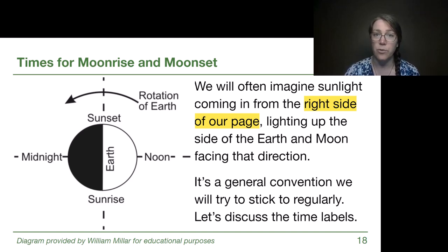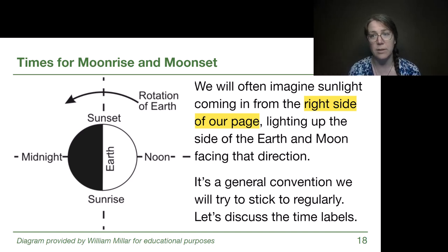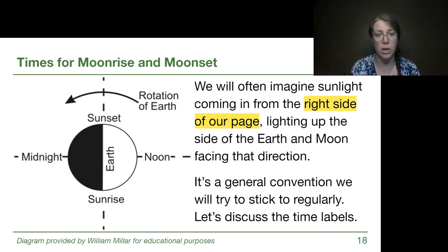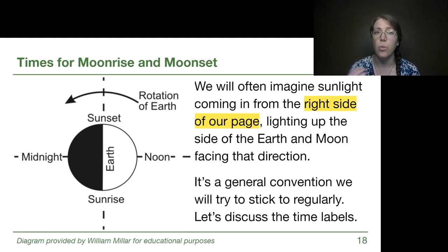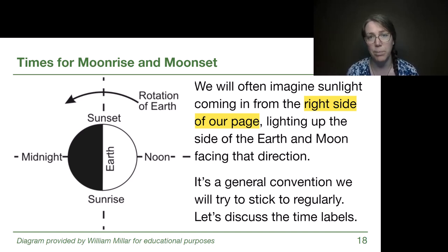We're going to be looking at different diagrams both here and in the previous deeper-look video. We'll try to be consistent by having sunlight come in from the right side of the page. By labeling noon, sunrise, midnight, and sunset on this slide, we've by definition put sunlight coming in from the right side, which is why the Earth drawn here is lit up on the right side and dark on the left side.